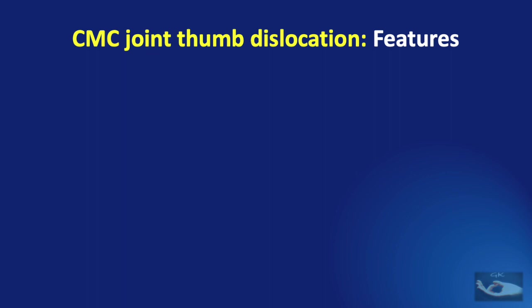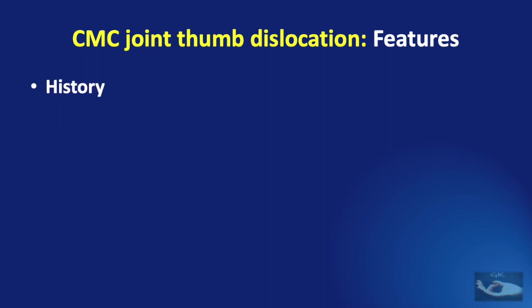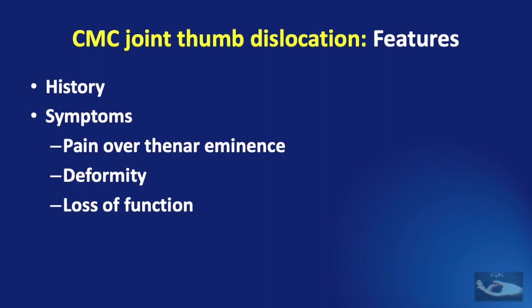Dislocations of the trapeziometacarpal joint can occur from closed or open injuries. A clinical diagnosis can be made from the history and symptoms of pain over the thenar eminence, a deformity formed by the dislocated thumb metacarpal base, and loss of function of the thumb.